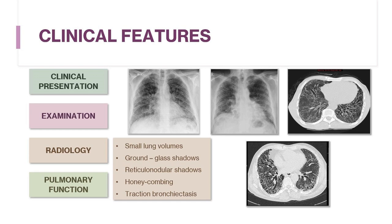However, the chest X-ray may be normal in early or limited disease. High-resolution CT scans will reveal combinations of ground glass changes, reticulonodular shadowing, honeycomb cysts, and traction bronchiectasis, all depending on the stage of the disease.